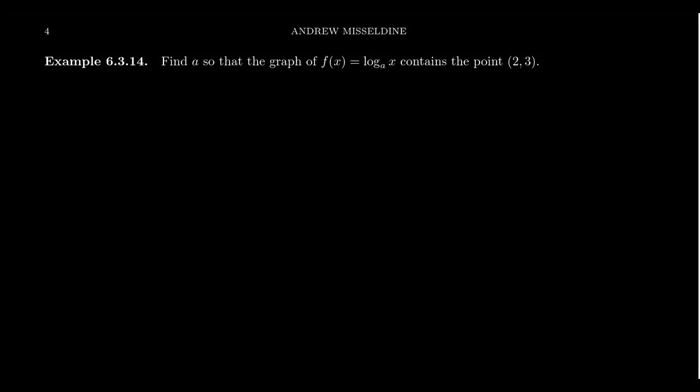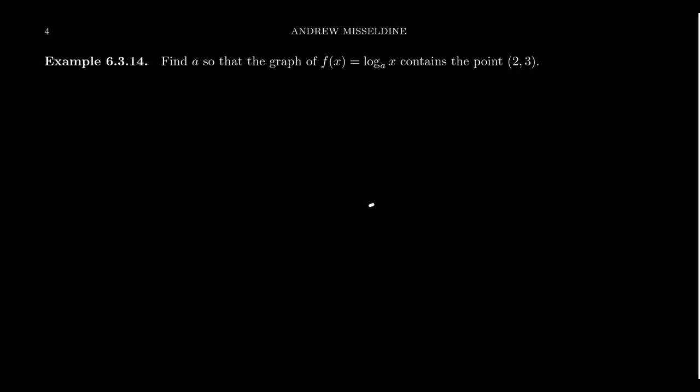We have seen previously that if we're given the formula of a logarithmic function, we can produce its graph. But what if we have to go the other way around? What if we have the graph of the function and we want to come up with a formula?